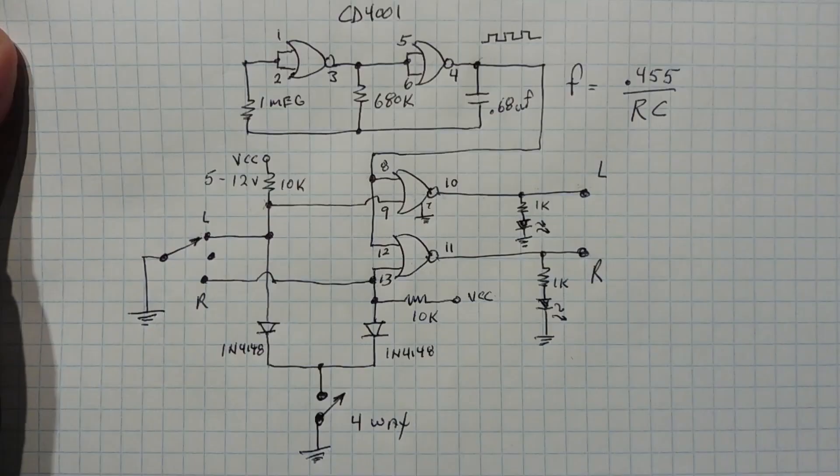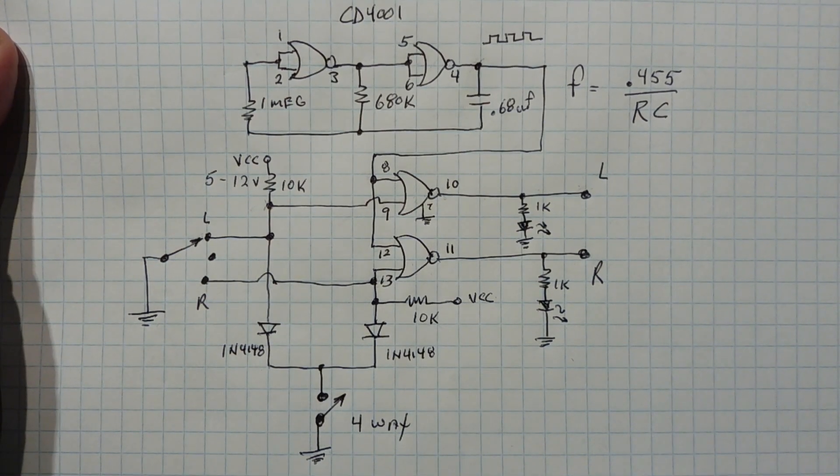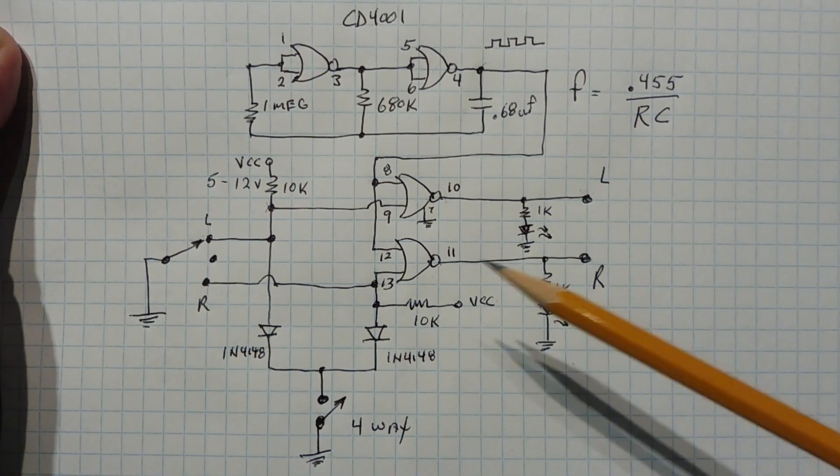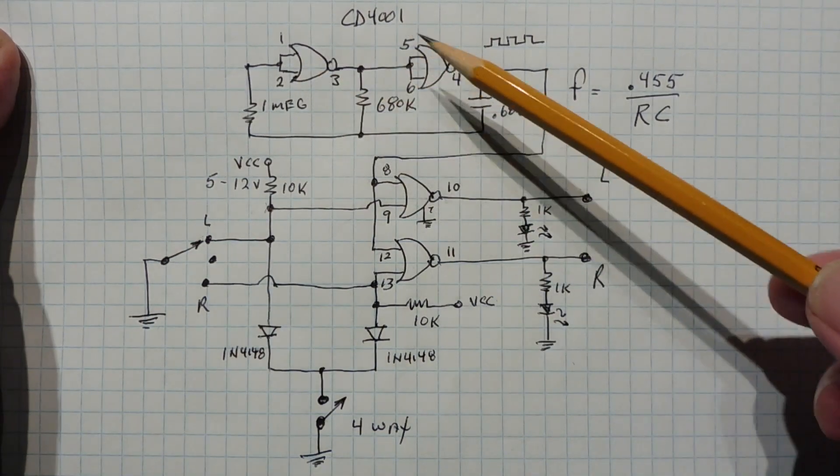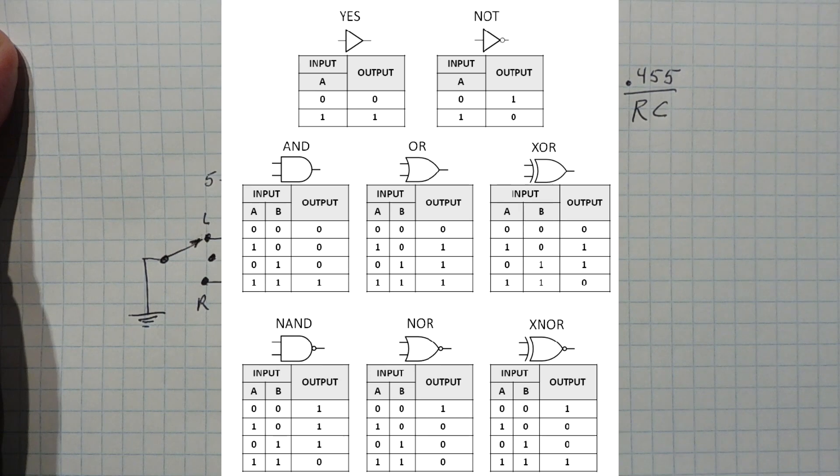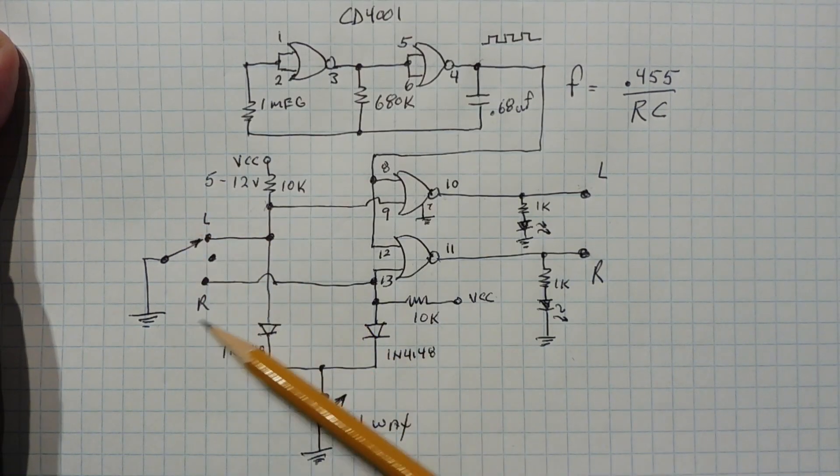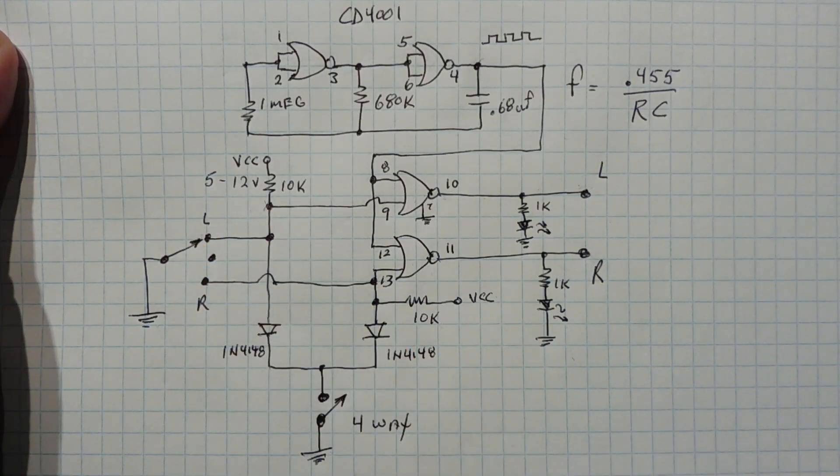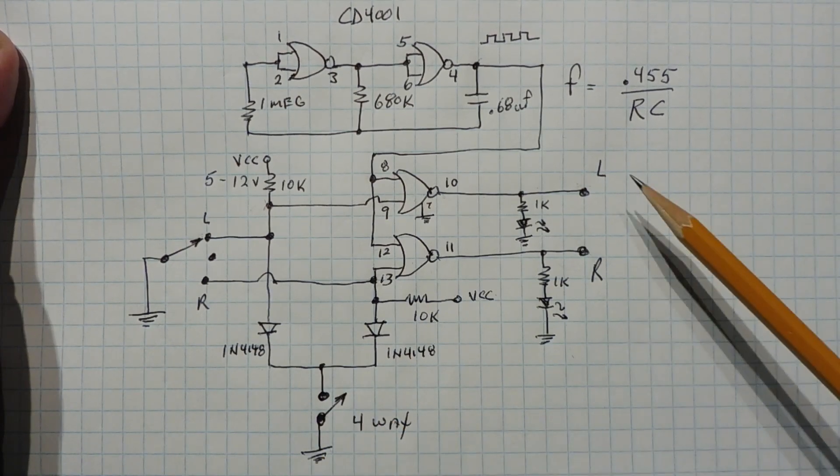Okay, here's the schematic diagram of my turn signal circuit which I built on my breadboard. You can see the four NOR gates, and if you look at the NOR gate truth table you can see how they function. Here's my left-right selector switch, that's my toggle switch. Here's my four-way flasher switch.